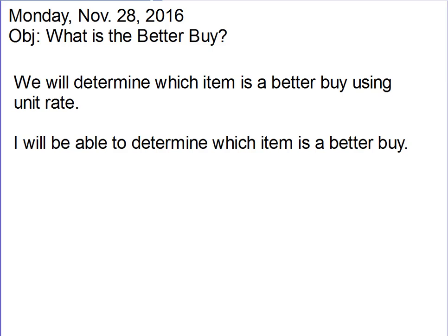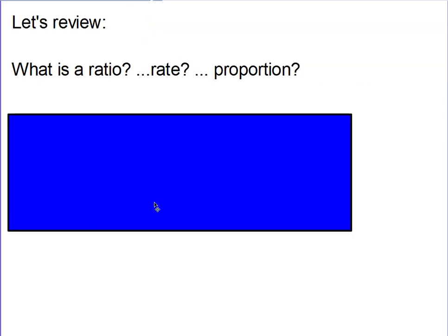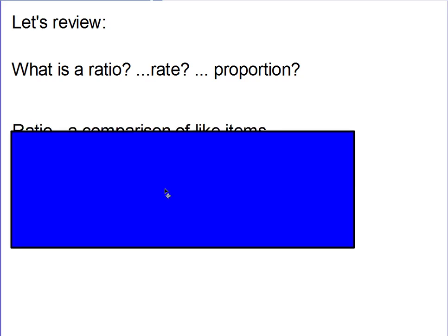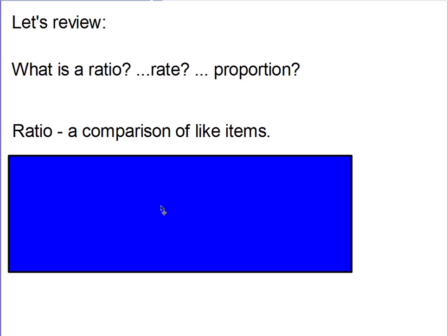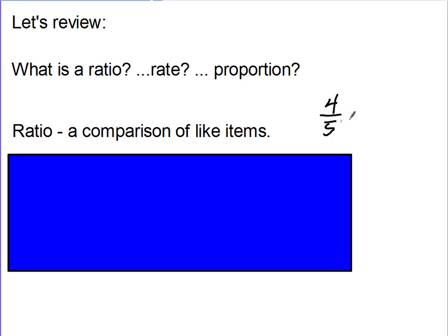So let's do a little review real quick. What is a ratio, a rate, and a proportion? Well, a ratio is a comparison of like items and you can typically compare them one of three ways, either as a fraction, with a colon, or with a TO. So you could write a ratio as 4 over 5, 4 colon 5, and 4 TO 5.